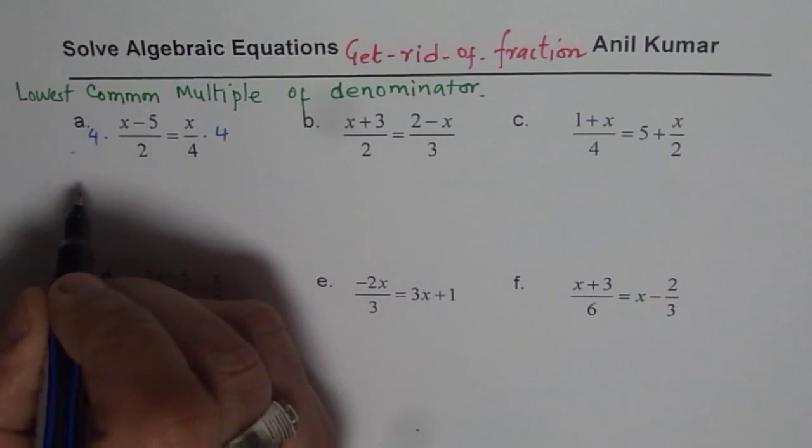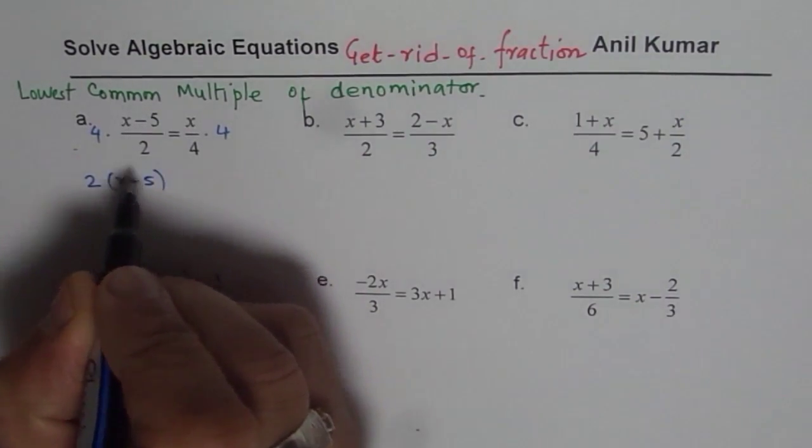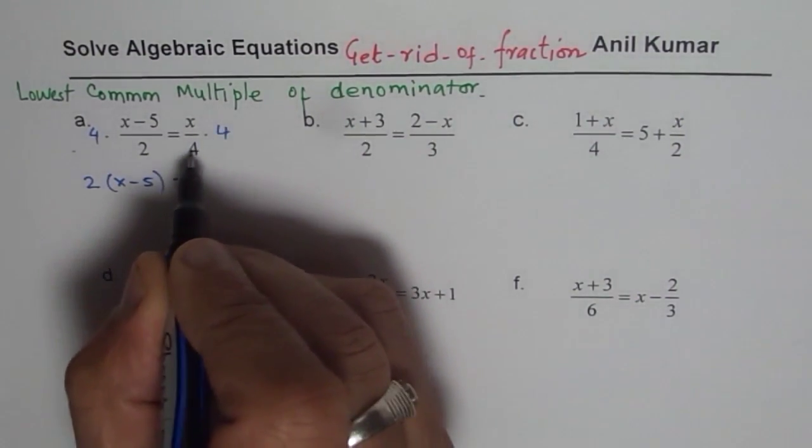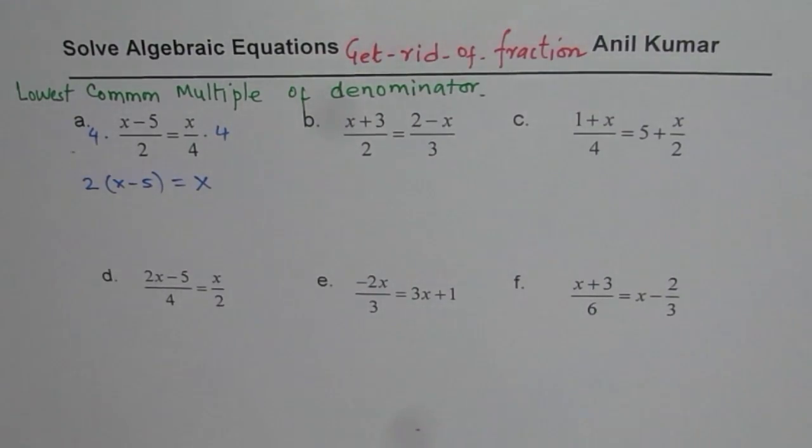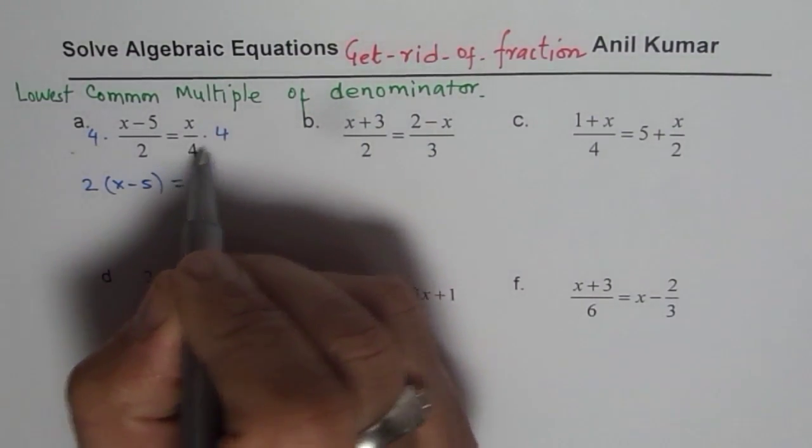I can divide 4 by 2. So what do I get? I get 2 times x minus 5 on the left side. Here 4 and 4 cancels and I get x. So I get kind of a linear equation without any fraction. So what I did at this stage was I simplified after multiplying.